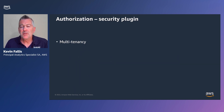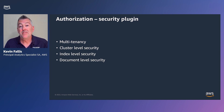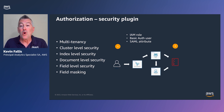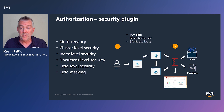From an authorization perspective, we leverage the security plugin discussed earlier. This supports multi-tenancy, cluster level security, index level security, document level security, field level security, and field masking. The way this works is that you have either an IAM role, a basic auth user, or SAML attributes that you provide for role mappings. These role mappings are then associated with a role that gives you the granular access of your choice — whether that's index, field level, document level, or masking. When you access that data through your client, OpenSearch Dashboards, or Kibana, you will see only the data that you've authorized those users to access.